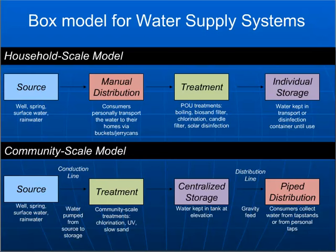In the household scale model, you have a manual distribution system where consumers personally go to the source and collect water in buckets or jerry cans, bringing them to the point of use — their homes or wherever it's being used, such as watering animals or washing clothes. This is where treatment would occur if being applied: boiling, biosand filtration, chlorination treatments like that.